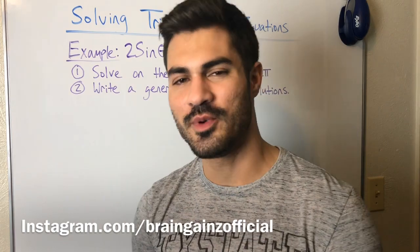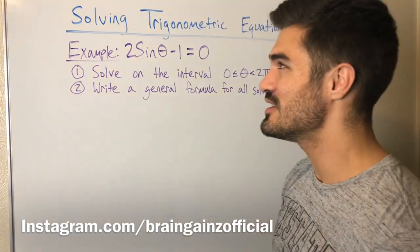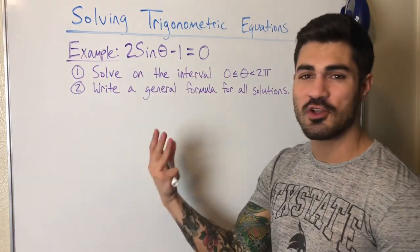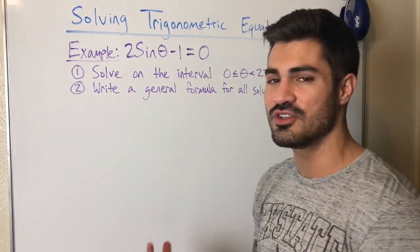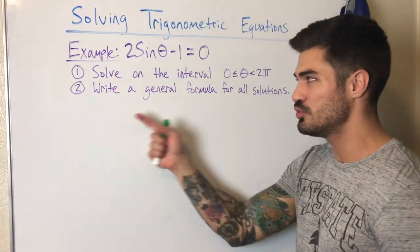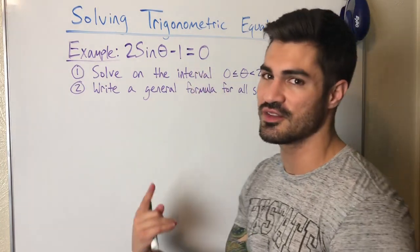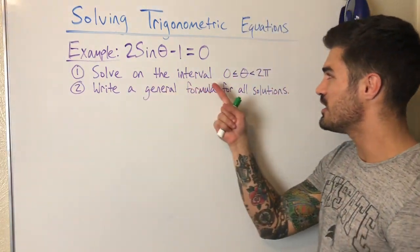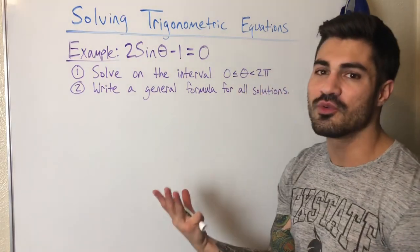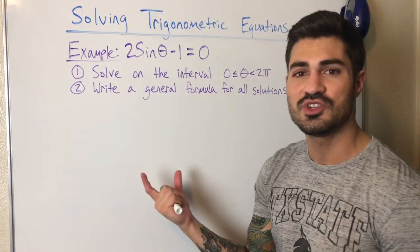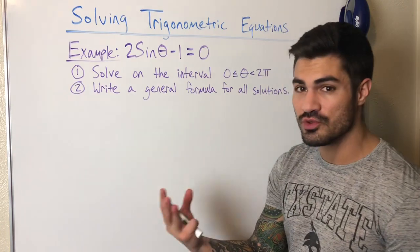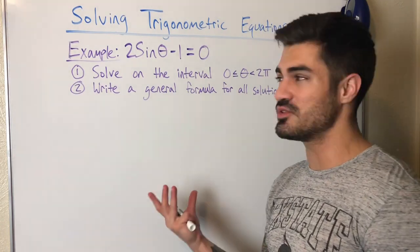Welcome to another video. In this video we're going to solve some trigonometric equations — equations where we solve for theta. We're usually instructed to do one of two things: either solve on the interval from zero to two pi, or write a general formula for all solutions. When solving on an interval from zero to two pi, those are the values on the unit circle, so we'll have a finite number of solutions — possibly zero, one, two, or more.